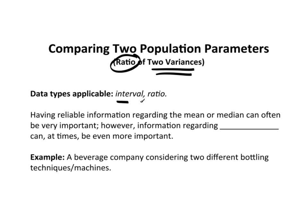The data types applicable are interval and ratio. If you have nominal or ordinal data, this doesn't make any sense.